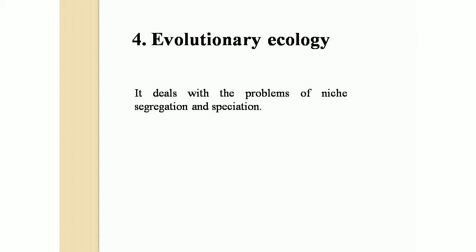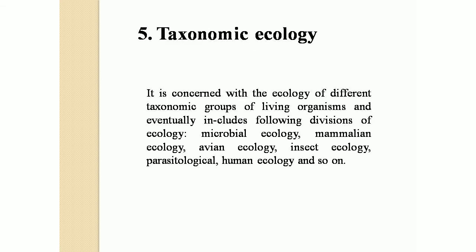4. Evolutionary ecology deals with the problems of niche segregation and speciation. 5. Taxonomic ecology is concerned with the ecology of different taxonomic groups of living organisms and eventually includes the following divisions of ecology.